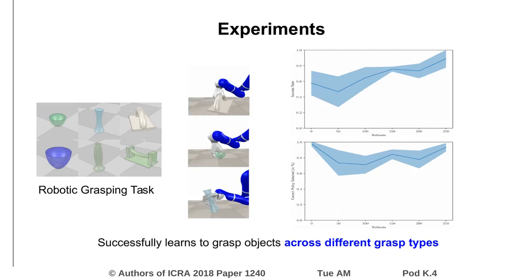Next, we evaluated the performance of our approach on a robotic grasping task, with six different objects across three different grasp types. Our approach reached a 90% success rate after only 250 rollouts, demonstrating its usefulness for solving complex robotics tasks.